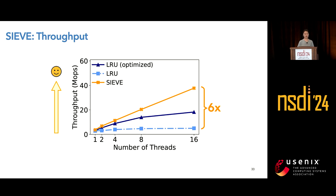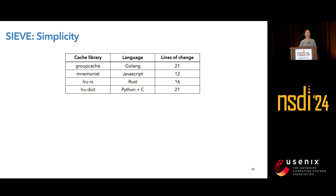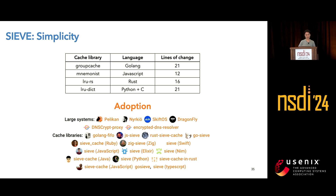We used millions of operations per second to quantify cache performance. Compared to LRU and optimized LRU in CacheLib, SIEVE achieves much better throughput. To illustrate SIEVE's simplicity, we implemented SIEVE in multiple different cache libraries. Because it's so simple, it usually takes less than 20 lines of code changes on average. There are already many implementations from the community, including cache libraries in Golang, Rust, JavaScript, Python, Java, C, C++, and more.